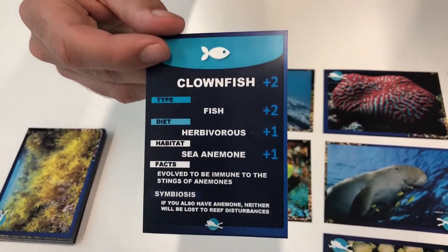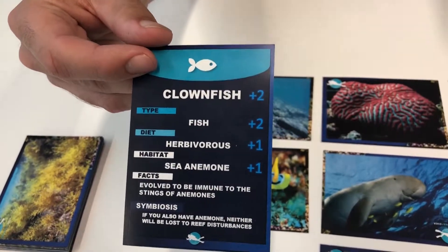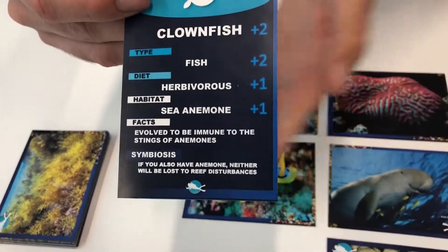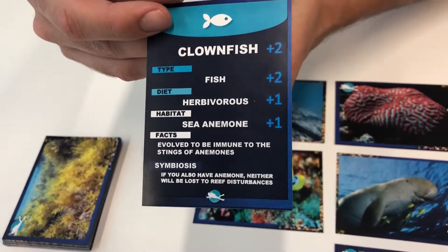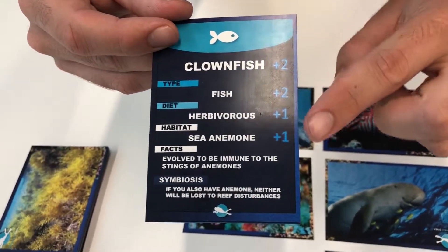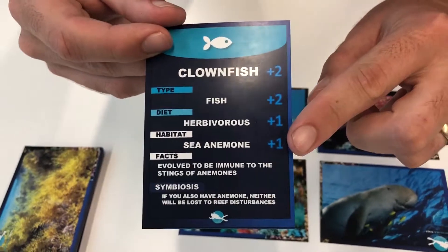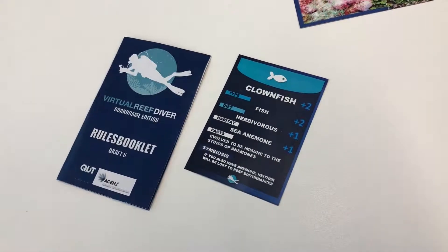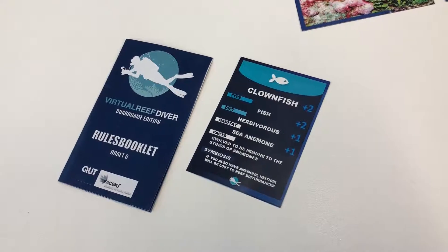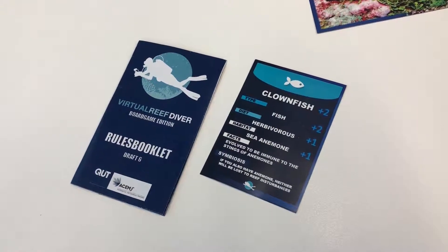The most important detail to get correct is the type, because if I guessed that wrong then it would go to the bottom of the spare reef card deck. There are other details that I can try and guess as well which would give me bonus points. So we would keep that for my team and then the other team would have a go at identifying something and we keep going.